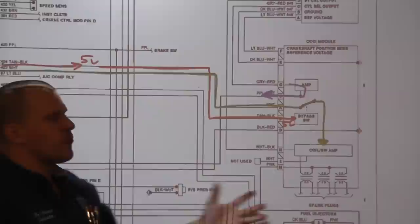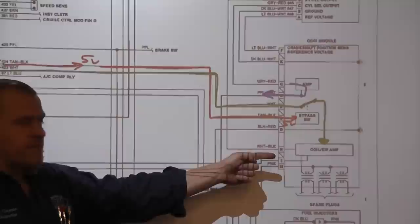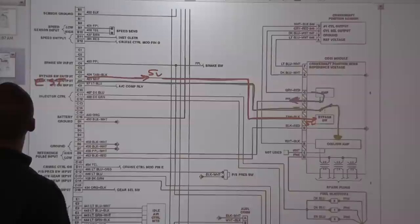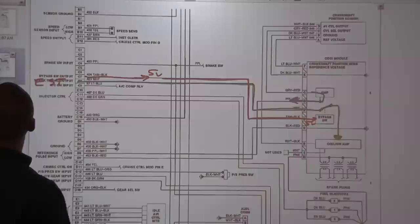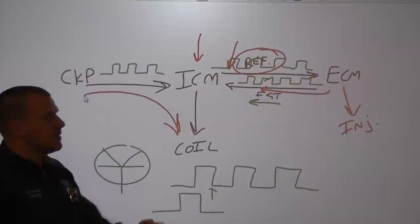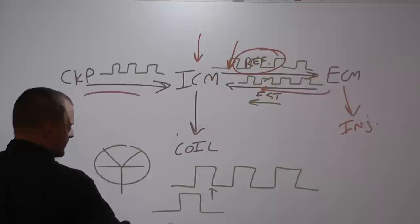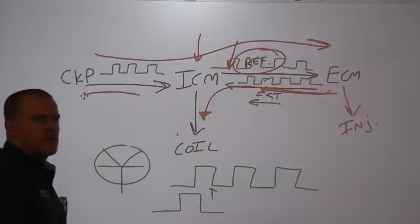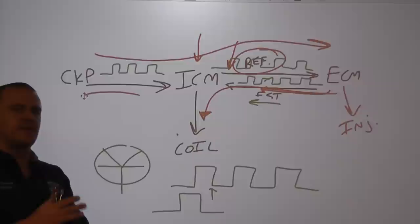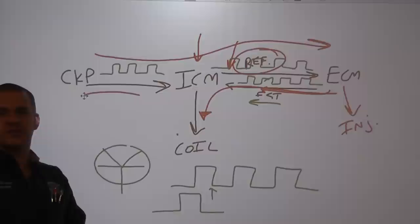During running, this is the running mode of a bypass ignition system — the computer is in control of the coils. To summarize: cranking, the crank sensor directly controls the coil through the ignition module. Running, that connection is broken but the reference circuit remains active and the computer controls the coils. This is important to understand when dealing with no-spark or no-injection-pulse situations. This system will function without the computer as far as spark goes, but it will not fire the injectors without the reference pulse.